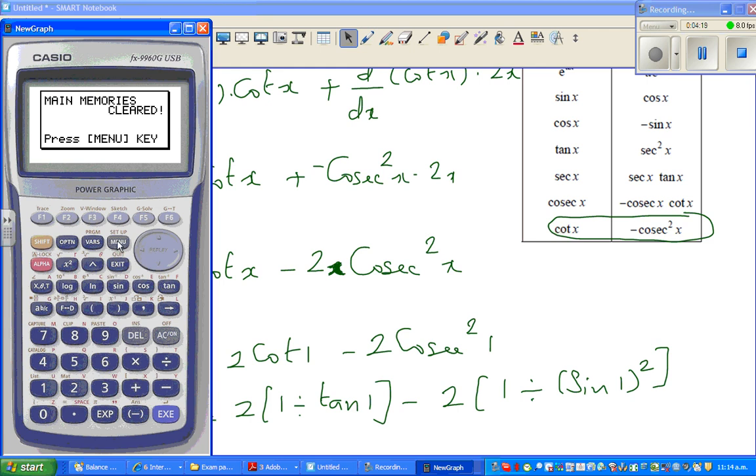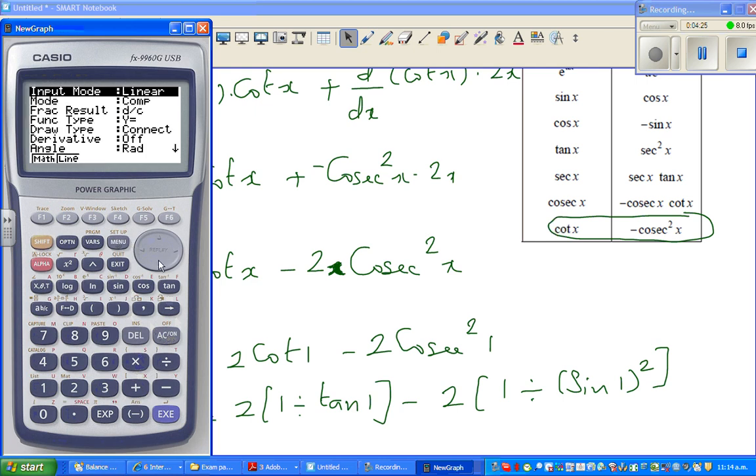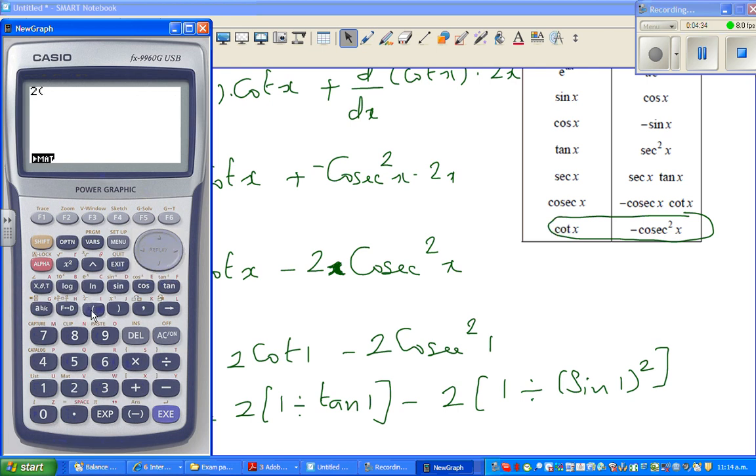So I have to go menu, run 2, it's always good for if you have a graphic calculator before doing this step, always check whether your degrees is in radians. So it's in radians, so I can continue. So that is 2 bracket, 1 divided by tan 1, minus 2 bracket 1 divided by sin 1 squared.